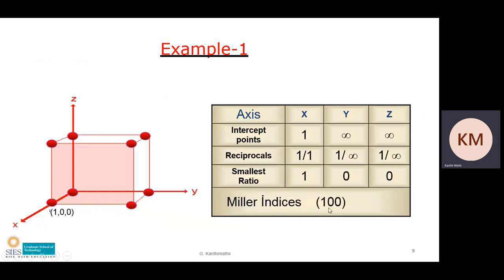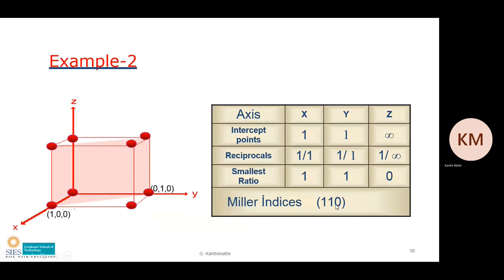Now let's see some examples of how to draw Miller index planes from given numbers. For (1 0 0): take reciprocals — 1/1=1, 1/0=∞, 1/0=∞. The plane cuts the x-axis at 1 and is parallel to both the y and z axes. So this pink plane, parallel to both y and z axes, represents the (1 0 0) plane.